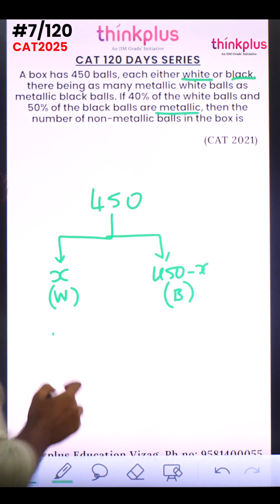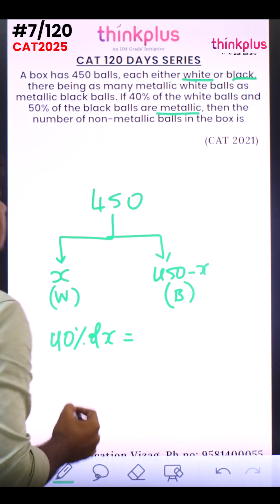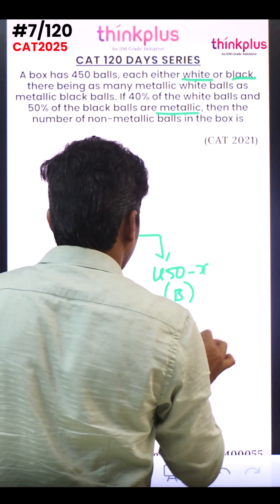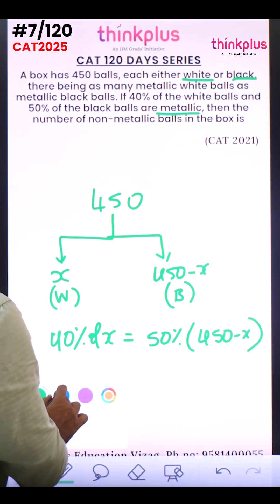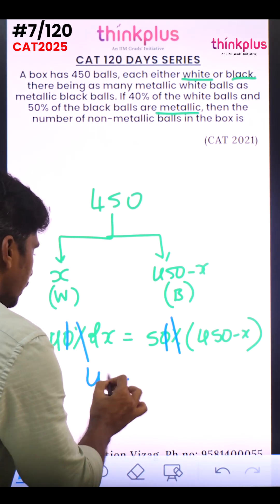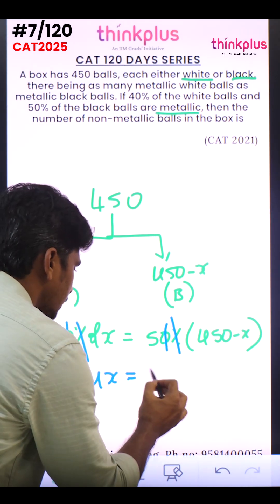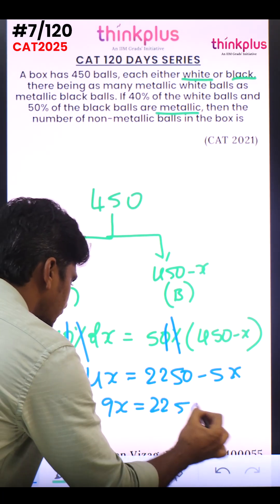Since the metallic balls are the same, 40 percent of x equals 50 percent of 450 minus x. Canceling the percentages, we get 4x equals 5 times 450 minus x, which gives us 4x equals 2250 minus 5x. So 9x equals 2250.